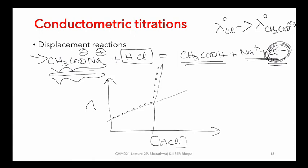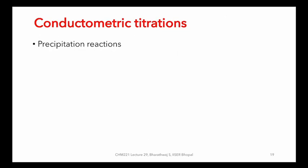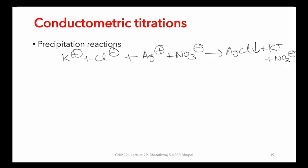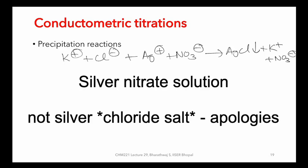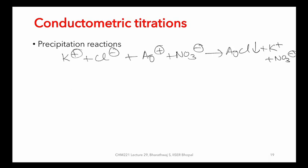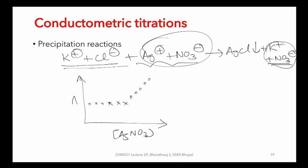Similarly, one can apply the same concept to precipitation reactions. For instance, if you have a KCl solution and add AgNO₃, it precipitates AgCl, which is not appreciably ionized, forming counter ions. As you keep adding AgNO₃, there is not much change in conductance, but the moment the endpoint is reached, excess AgNO₃ addition results in an increase in conductance. Fitting these two curves gives the endpoint for such a precipitation reaction.